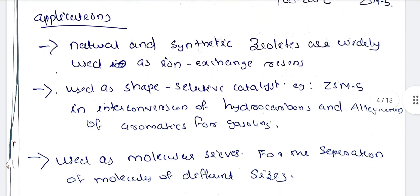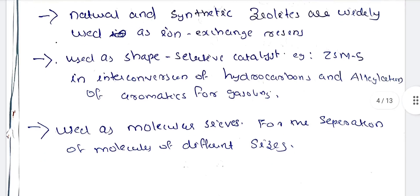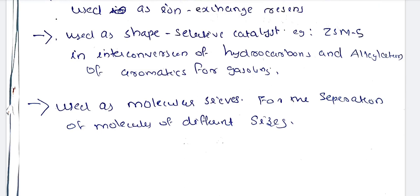Applications: natural and synthetic zeolites are widely used in ion exchange resins. ZSM-5 is used as a shape-selective catalyst for the interconversion of hydrocarbons and alkylation of aromatics for gasoline production. Zeolites are also used as molecular sieves for the separation of molecules of different sizes.